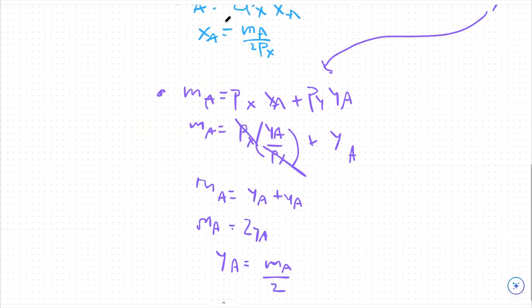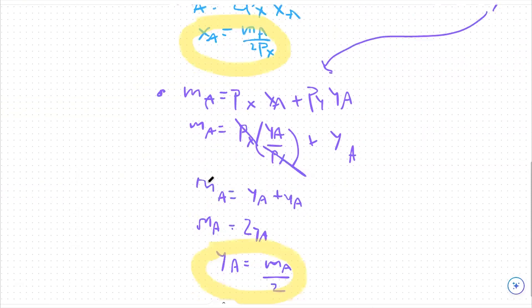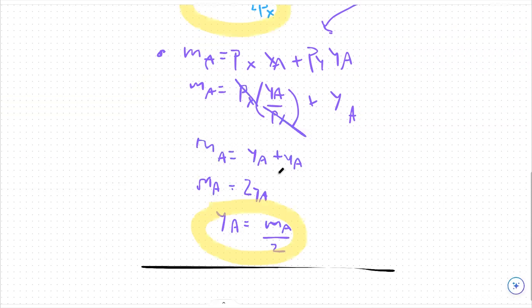So we have our optimal amount of xA and our optimal amount of yA. If we wanted to, what we could do next is solve also for our optimal amount of xB and yB using the exact same process.